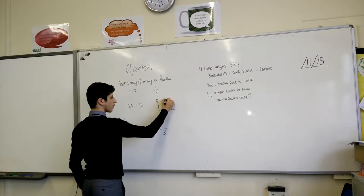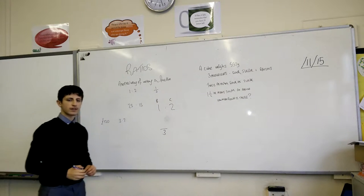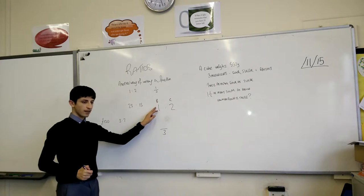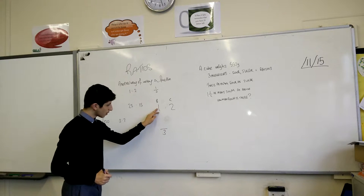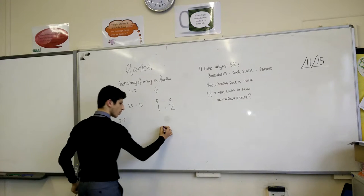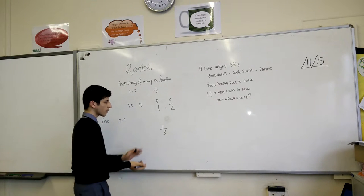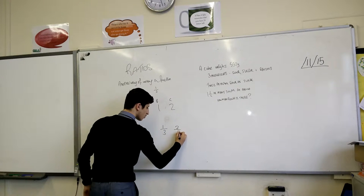Again, if we use the example of blue and green sweets. You're saying that for one blue sweet you have two green sweets. So the total would be a third blue and the remainder would just be two thirds green.